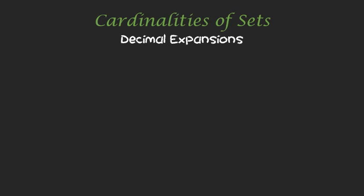Before we talk about these real numbers between 0 and 1, we need to talk about decimal expansions. How can we write out an arbitrary real number between 0 and 1? We can do it with decimal expansions. And here's one other really mind-blowing thing to start with: something like 0.99999 repeating — 9s all the way down, 9s to infinity, no room to add anything else — this is really the same thing as 1. That's really just another way to write the natural number 1 as 0.99999 repeating.